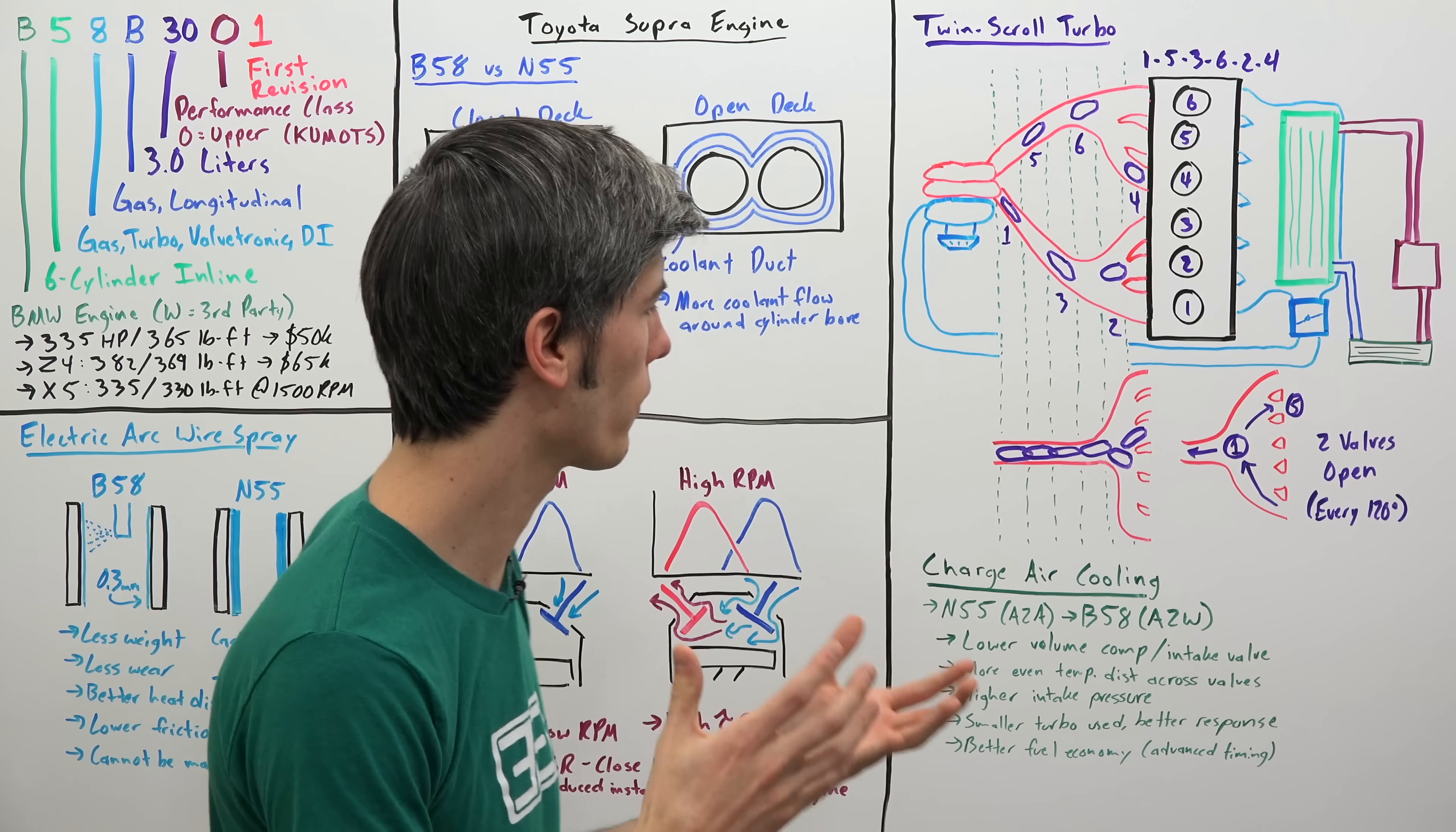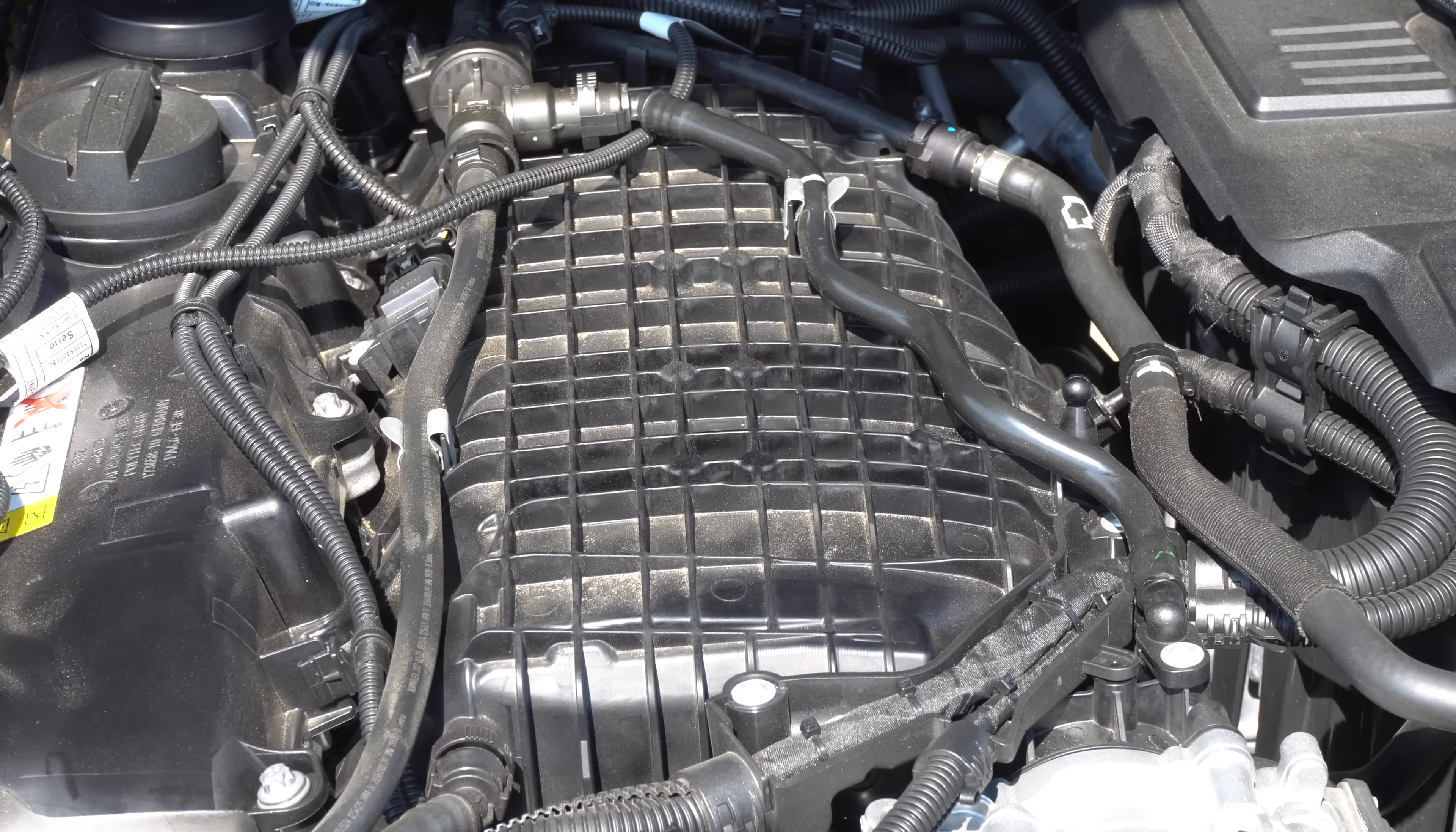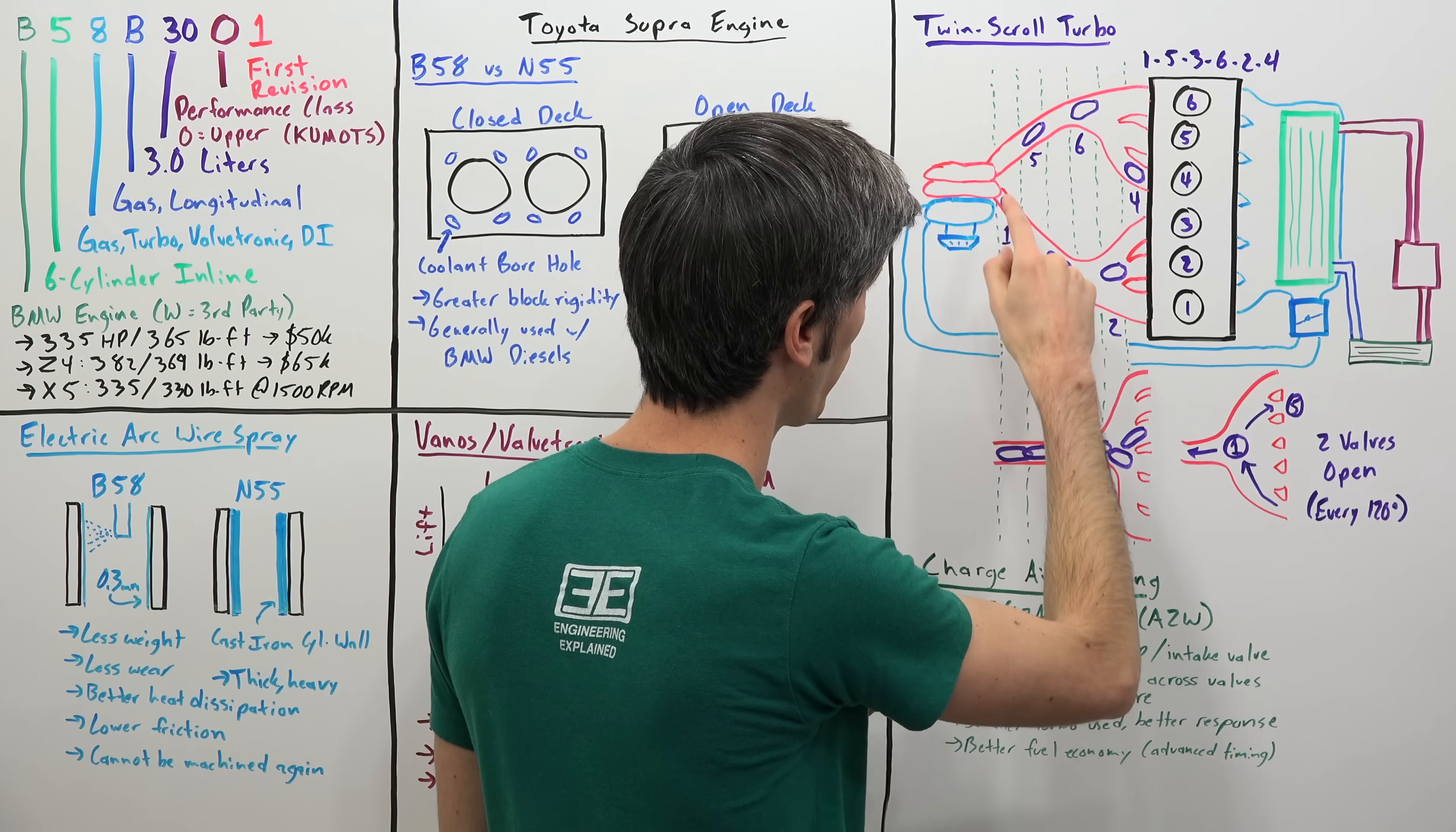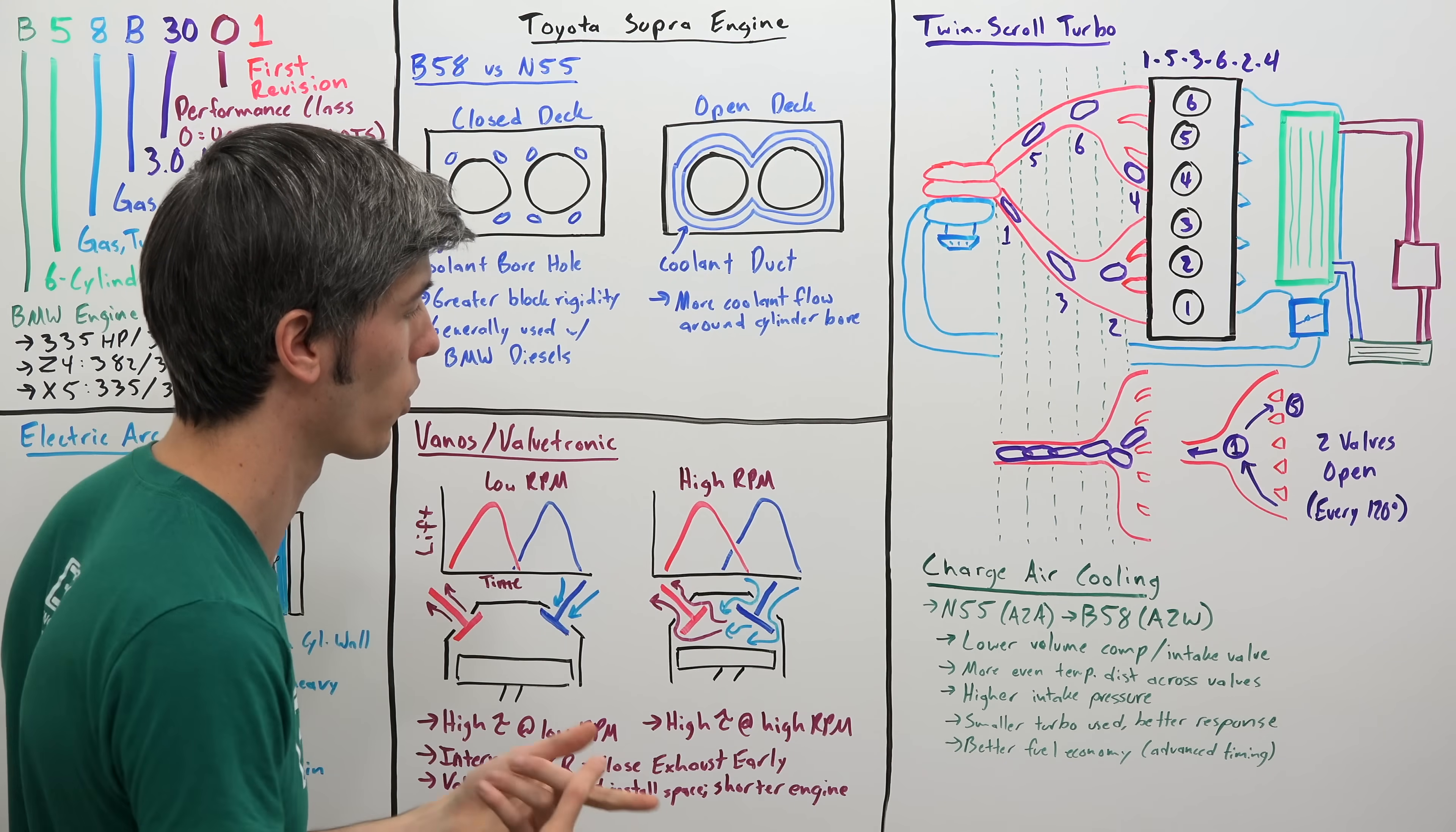And finally this engine has a different charge air cooling system versus the N55, which used an air-to-air intercooler, and now they've switched over in the B58 to an air-to-water intercooler. So you'll notice the intercooler is right above the engine. So you're going to have a separate heat exchanger up in front of the car which is going to allow that coolant to circulate between it and the intercooler. And of course then you will have your air travel from the turbo compressor into the intake manifold where you've got that integrated charge air intercooler and then pass into the cylinders.